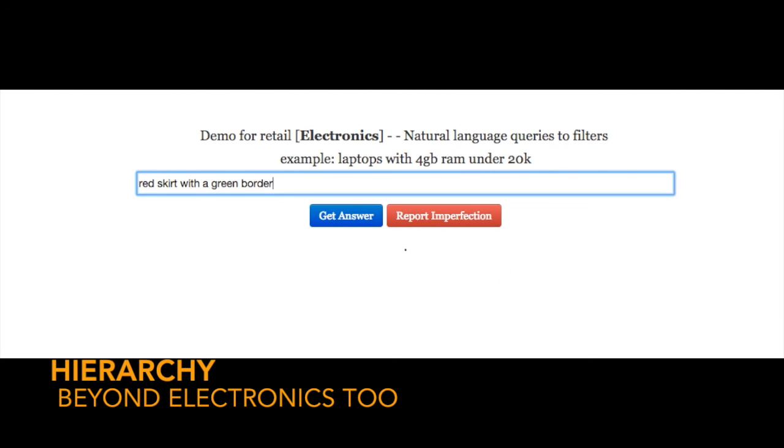It's not just restricted to electronics. For example if you say red skirt with a green border, it will tell you that skirts with the attribute red and border that is green, so correctly associating attributes in a very nice hierarchy and not just restricted to electronics, we have capability to do it for apparel.